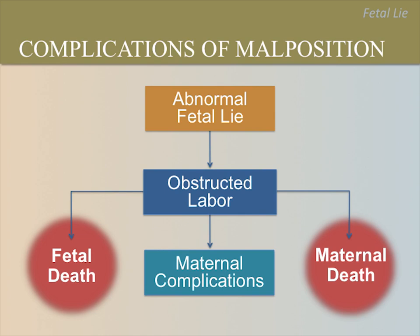Obstructed labor can result in fetal or maternal death or maternal complications. During a prolonged and obstructed labor, oxygen flow to the baby's brain can decrease, resulting in death or disability. Another possibility is that the long labor results in a hole or tear between the mother's vagina and rectum, or vagina and bladder, called a fistula. With a fistula, the woman is unable to control her feces or urine. A mother can also die from a ruptured uterus or infection.